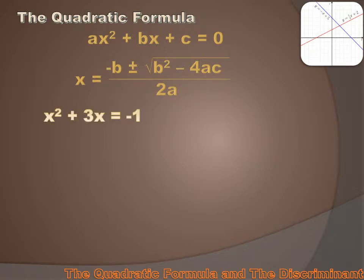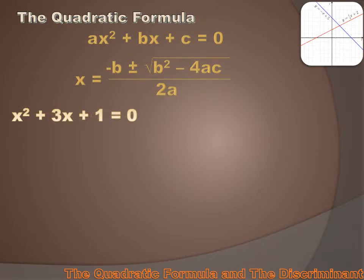Let's look at how it can be useful. Let's say we had the equation x squared plus 3x equals minus 1. The first thing I'd want to do is put that in standard form: x squared plus 3x plus 1 equals 0. When I look at this, it doesn't look like I can factor that at all. I could complete the square or graph it, but let's solve this using the quadratic formula. I've got an a value of 1, a b value of plus 3, and a c value of plus 1.